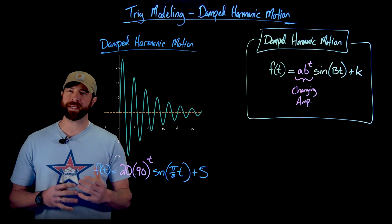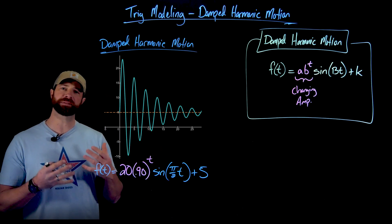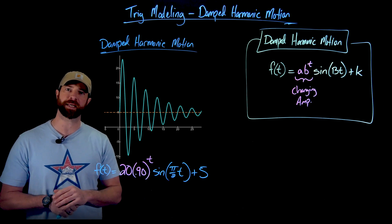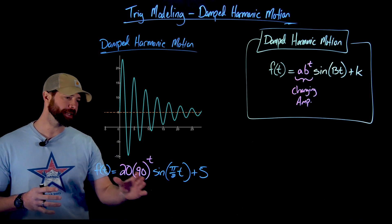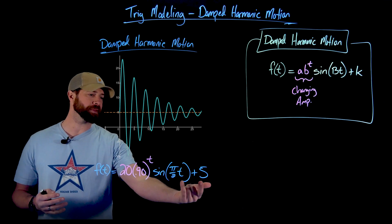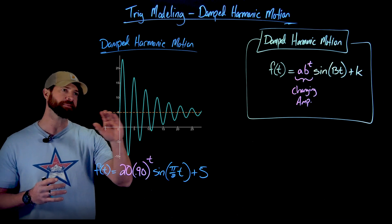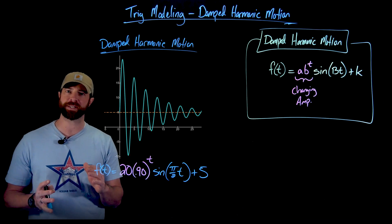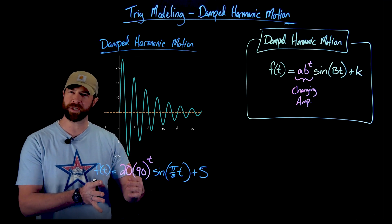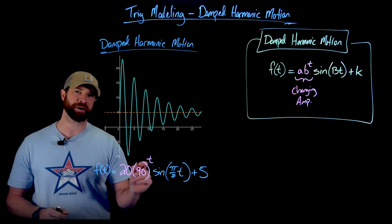Before we get into an application of damped harmonic motion, let's look at this example right here that gives us a visual understanding of what this kind of function looks like. Importantly here, if we're looking at the blue in this model right here, this is what creates the oscillation and the midline. As you look at this graphical representation right here, we have this midline here at five that stays constant. And again that's because this addition right here stays constant at five.